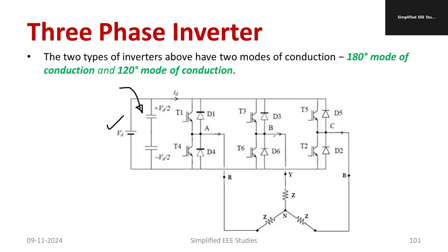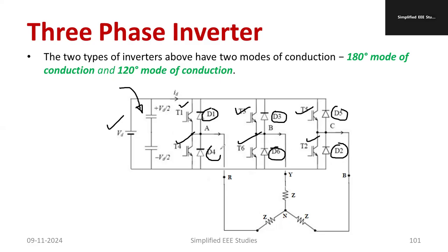T1, T3, T5 belong to the positive group, while T4, T6, T2 belong to the negative group. To ensure protection of these switches, we have freewheeling diodes D1, D3, D5, D2, D6, and D4. Otherwise the switches would be spoiled. The freewheeling diode ensures the switches are safe — current will be divided and will not fall directly onto the specified switches.